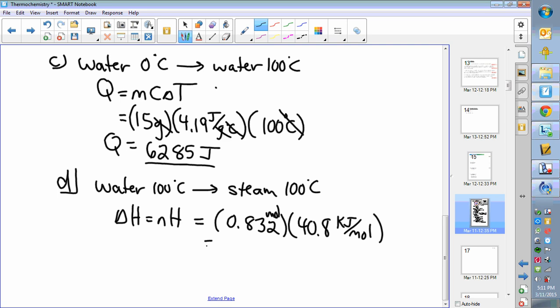The n is 0.832 moles and our molar enthalpy for steam is 40.8 kilojoules per mole. So now we're going to take the two numbers and multiply those together—we get ourselves 33.945 kilojoules. Watching those units carefully, multiply that by a thousand—33,945 joules.